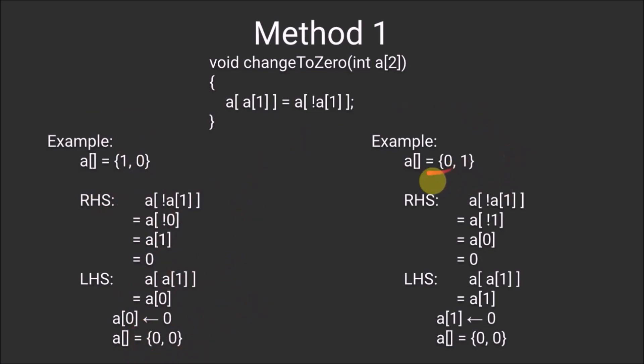In the second example, we have an array 0, 1. The RHS will be the complement of A[1] which is 1. So, the complement of 1 will be 0, and then we find the value at A[0] which is 0. In the LHS, we find the value of A[1] which is 1, and at A[1], we assign the value of RHS which is 0. Finally, our array becomes 0, 0.